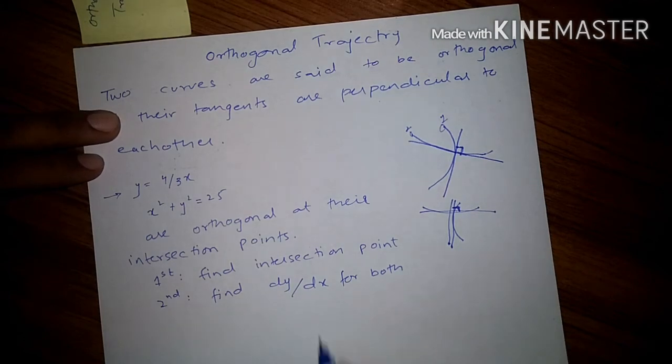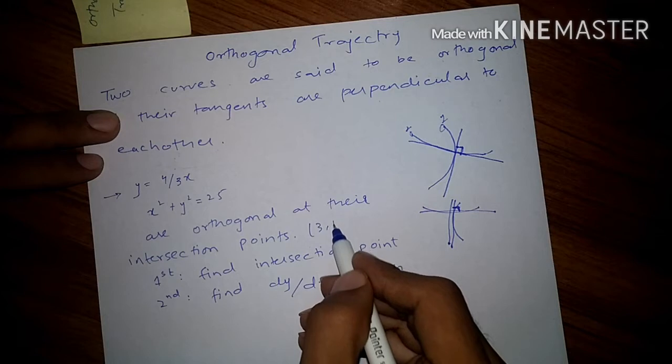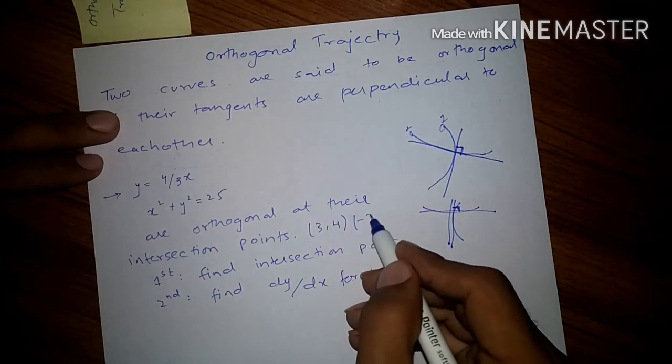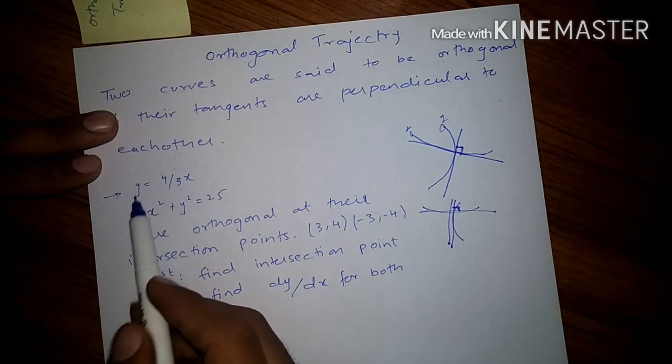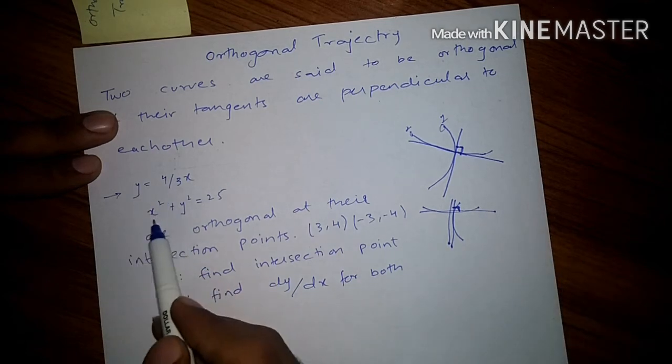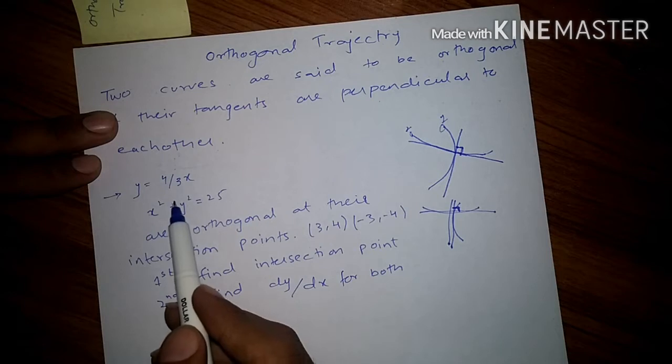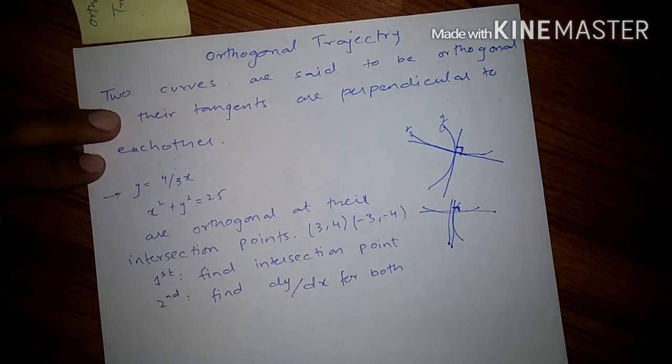The intersection points are going to be (3,4) and (-3,4). You can get them by putting value of y in this equation or solving them simultaneously.